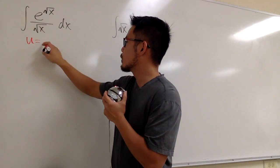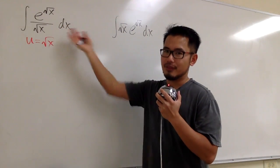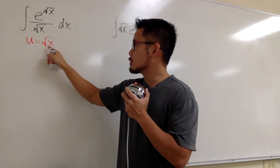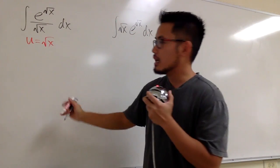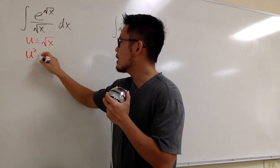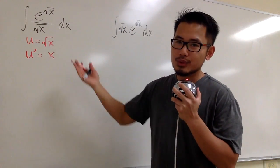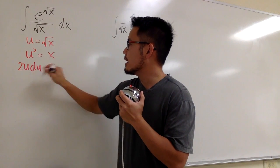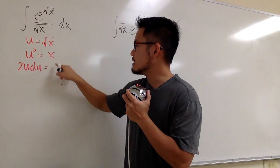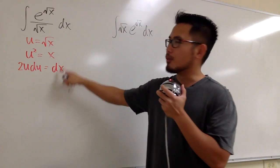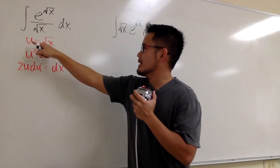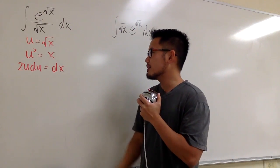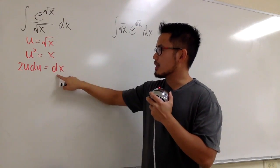Let me put this into action. We set u equal to square root of x, and u-sub is enough for the first one. Before taking the derivative, I can square both sides: u squared equals x. Taking the derivative gives 2u du, and the derivative of x is dx. So we can solve for dx right away. When you have u equal to square root of x, you can square both sides first, then take the derivative to get dx directly.